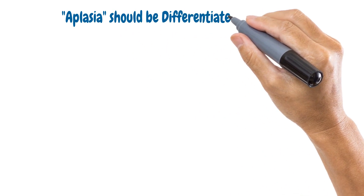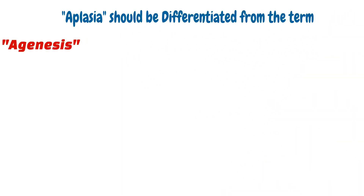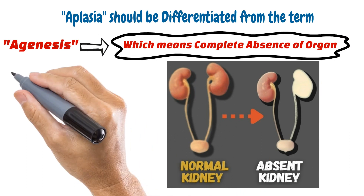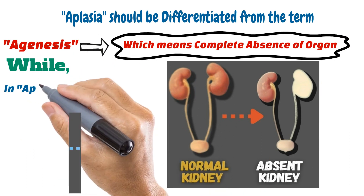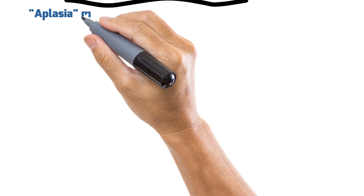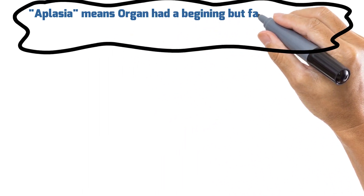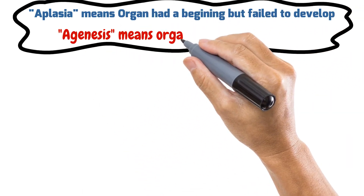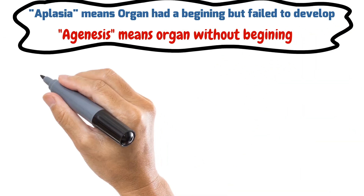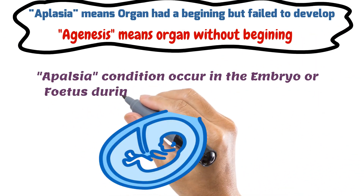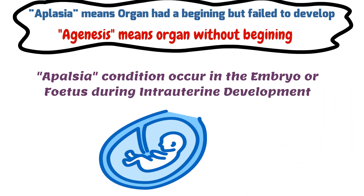Aplasia should be differentiated from the term agenesis. Agenesis means complete absence of an organ, while in Aplasia there is an organ but it failed to develop. In other words, Aplasia means the organ had a beginning but failed to develop, while agenesis means the organ had no beginning at all.